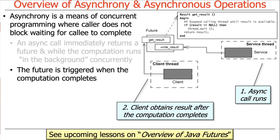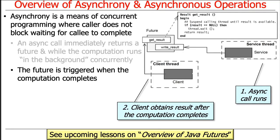When you get a text, it's going to beep. When you get an email, you're going to get notified. There are a bunch of different things — Facebook posts, text messages, email — that notify you asynchronously when something arrives. The basic idea is that you start an operation, get back a future, the asynchronous call runs in the background, and then at some point you're notified and obtain the result.